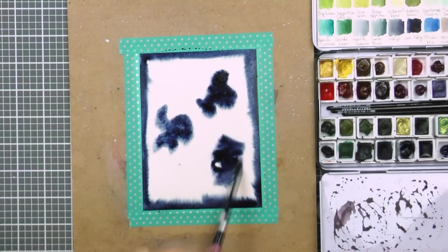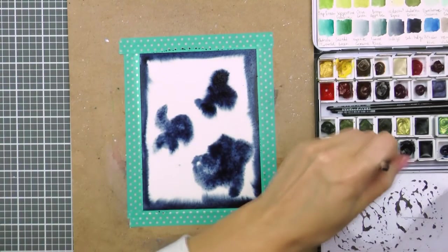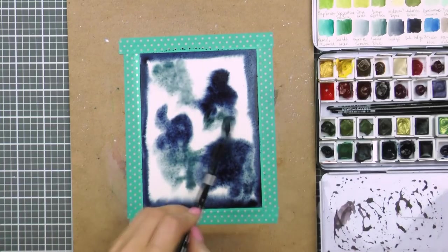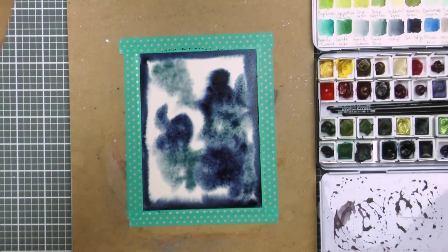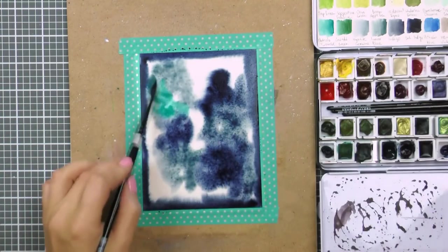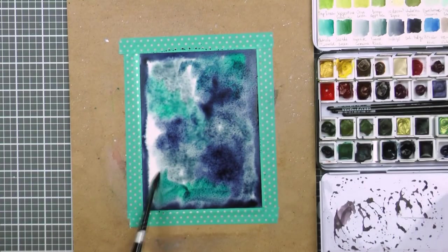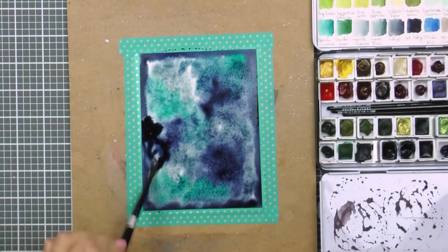I first added indigo around the edges letting the water carry the pigment towards the center of my panel and also added this same color onto three sections, again letting the water distribute the color. You want to pre-wet your paper so that the color you drop onto the paper doesn't just sit there. You want it to move and interact with other colors.